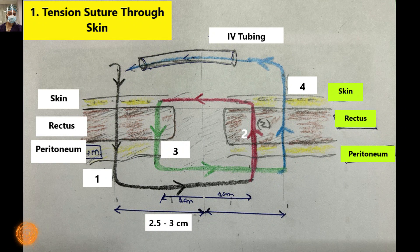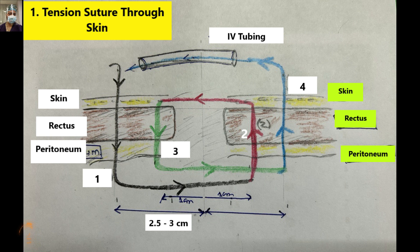This picture shows the classical mass closure technique as taught in textbooks. We will also demonstrate our modified technique. Both techniques will be discussed and it is up to you to decide which to follow. For this technique, we use a PDS loop suture — we divide the loop and convert it into a single thread. You can use nylon depending on your practice, but we prefer PDS number one loop.